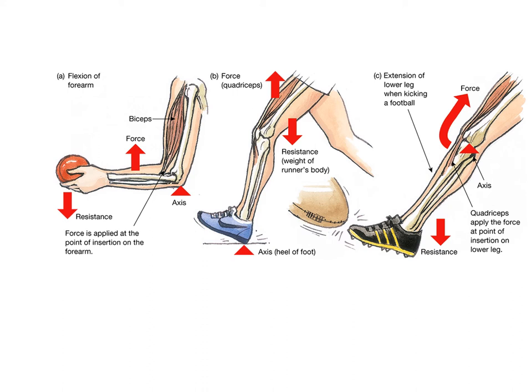For a runner, the axis is the heel, force comes from the quadriceps over the knee joint, and resistance is the body weight at the end of the lever — a third class lever. For kicking an Aussie rules football, the axis is the knee, the quadriceps attach by tendon below the knee joint applying force, and the resistance is the football at the end.